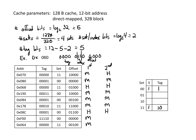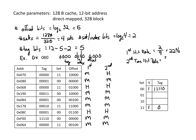For the second to last address, we're looking at set zero for tag 1110, which isn't in the cache — a miss, and we update the tag. Finally, set three is looking for tag zero but currently has tag 10 — a miss, and we replace it with tag zero. Looking at the hit rates: on the first pass we had 2 hits out of 9 accesses, giving a hit rate of approximately 22%. On the second pass, we had 3 hits out of 9 accesses, improving the hit rate to 33%.